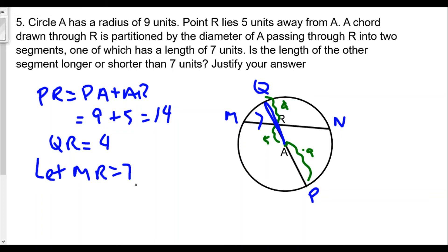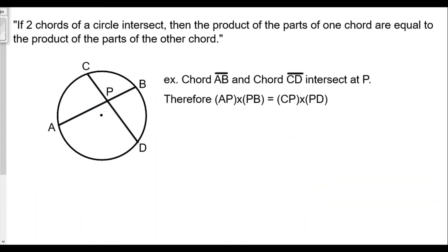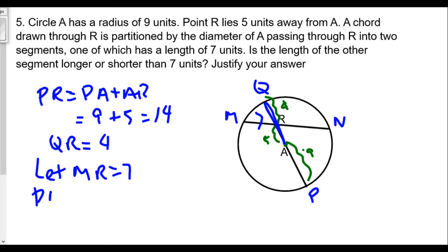The question says one segment has length of seven, so we'll let MR equal seven. Now we set up our equation. When two chords intersect in a circle, the product of the parts of one chord equals the product of the parts of the other chord. Here's our rule: if two chords of a circle intersect, then the product of the parts of one chord equals the product of the parts of the other chord. Chord AB and chord CD intersect at P, therefore AP times PB equals CP times PD.